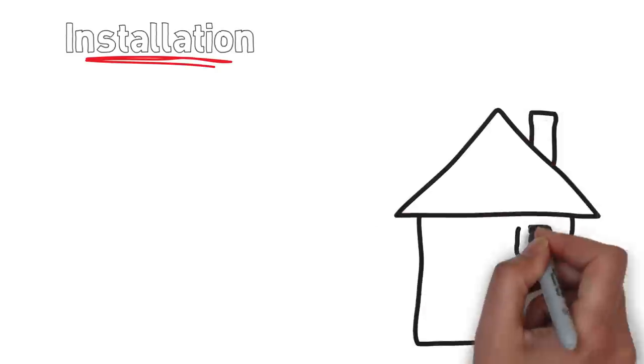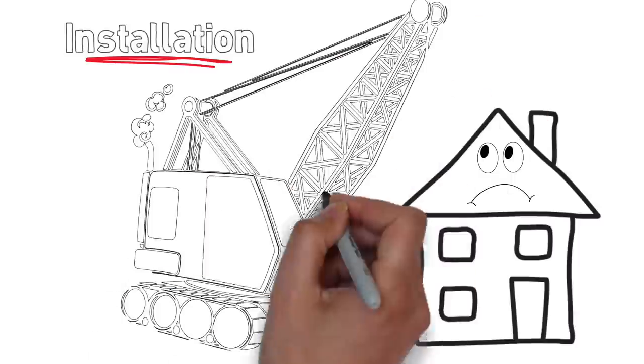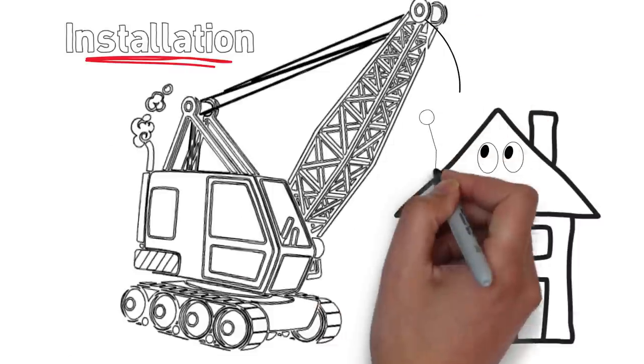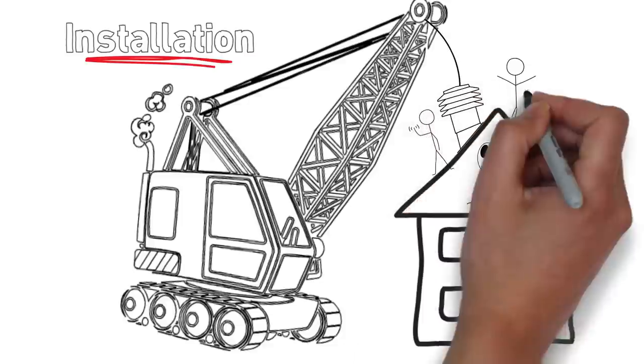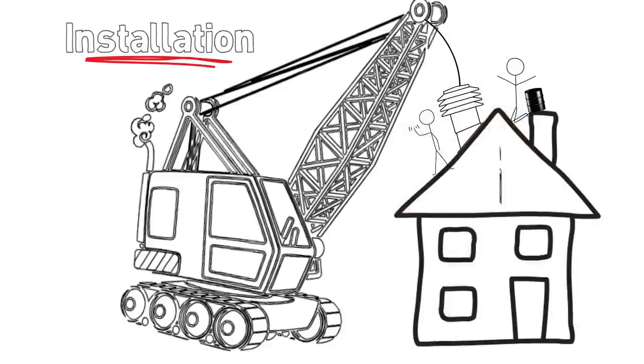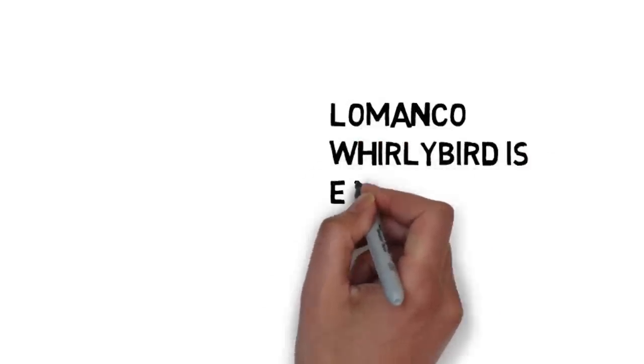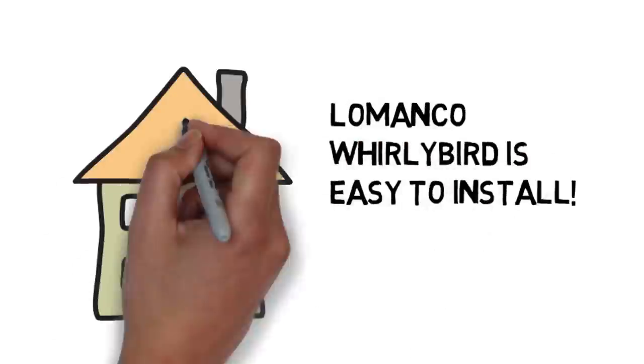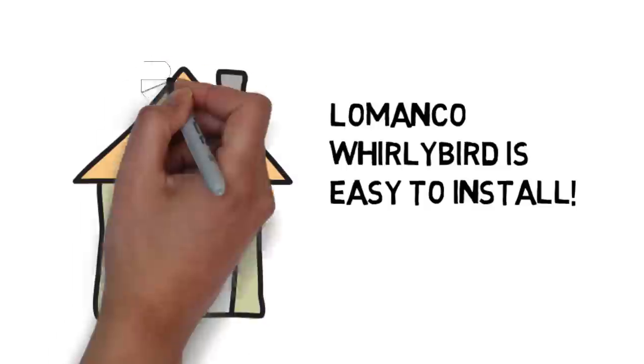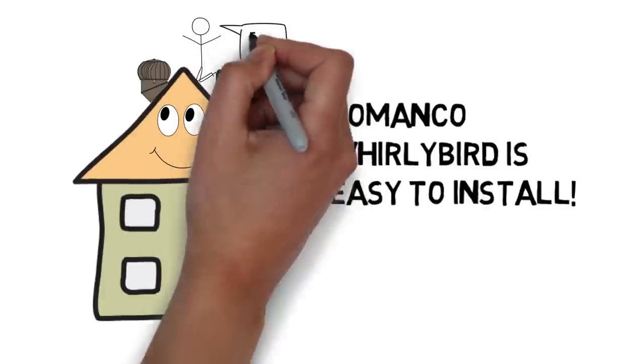The Maximum weighs in at over 26 pounds. They even show at least two people needed on their instructions to install. And state that a generous amount of roofing cement is required to prevent leaking. Engineered for strength and still weighing under 4 pounds, the Lamanco Whorlybird is quick, safe and easy for one person to install with common hand tools.